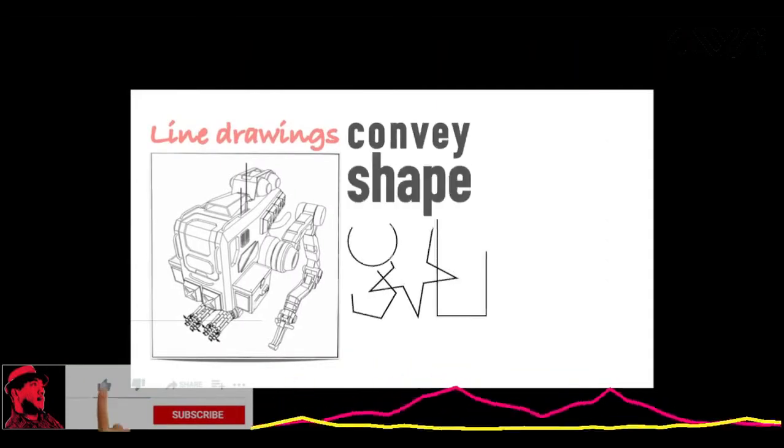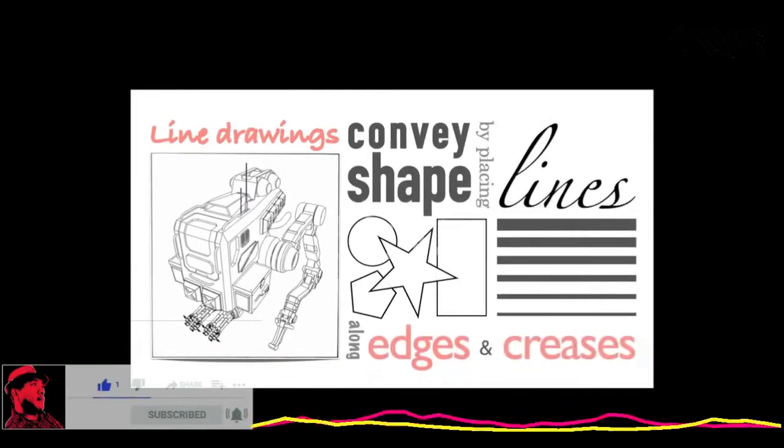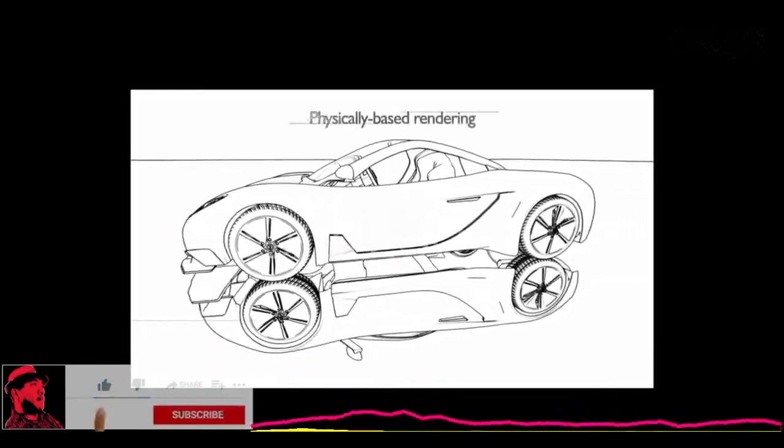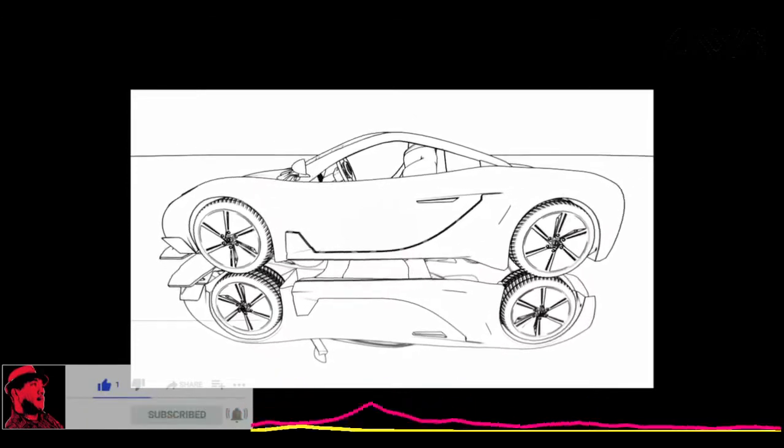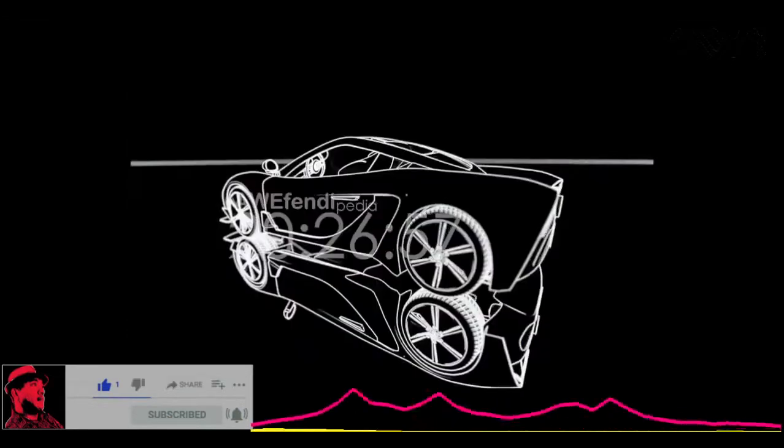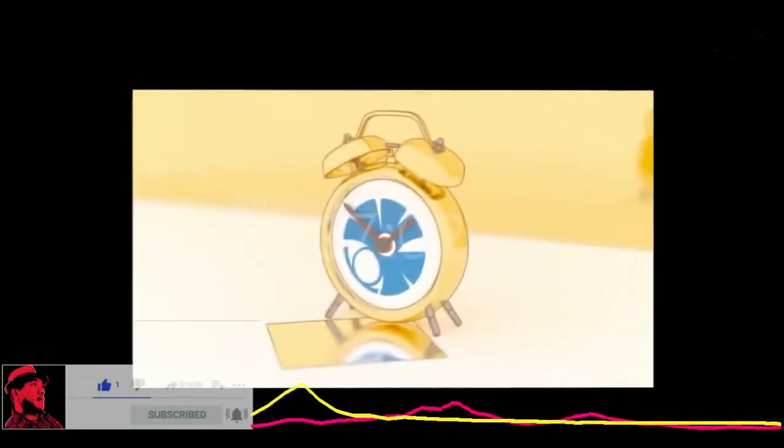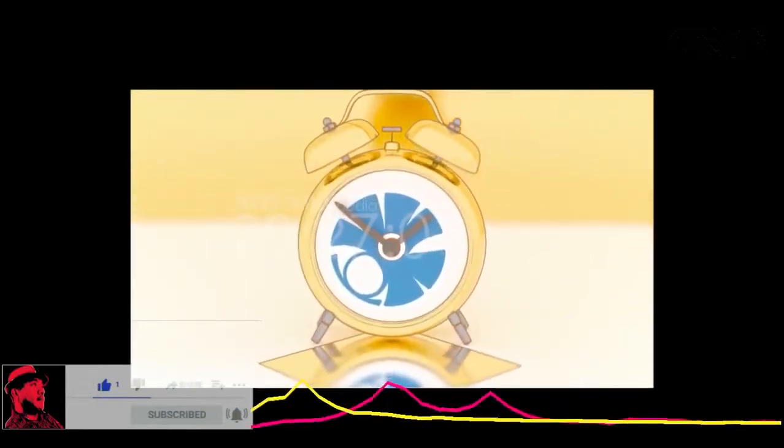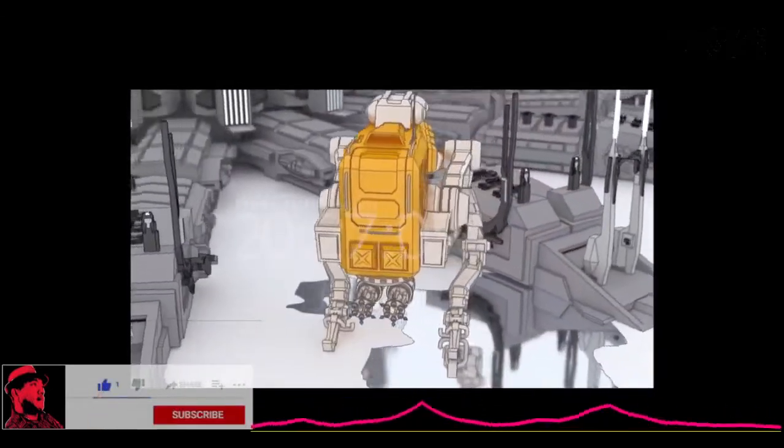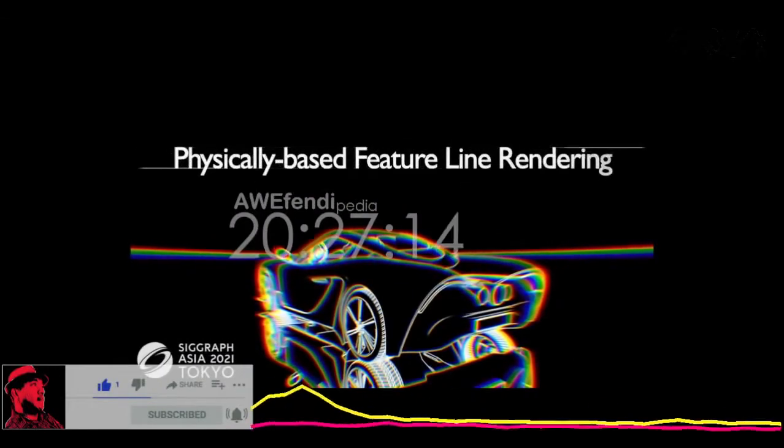Line drawings convey the shape of an object by placing lines along edges and creases. We integrated line drawing into physically-based rendering, allowing us to draw lines with glossy reflections, depth of field, and spectral dispersion, all physically simulated and seamlessly combined, opening up new avenues of creative expression for artists. To find out more, come see our talk on physically-based feature line rendering.